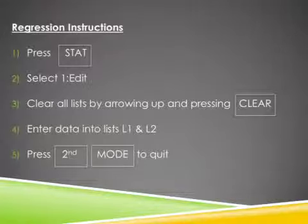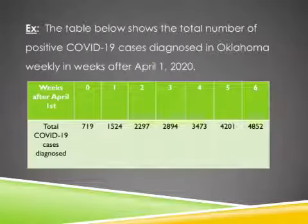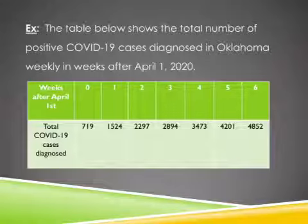And if you flip over to the next page in your notes, you'll see the data that we're going to put into the table. The data that we're going to put into the table is one of my brand new questions. This table shows the total number of positive COVID-19 cases diagnosed in Oklahoma weekly in weeks after April 1st. So this is early on in Oklahoma, really early, like right as you were starting to do all your stuff online with your professors last semester.